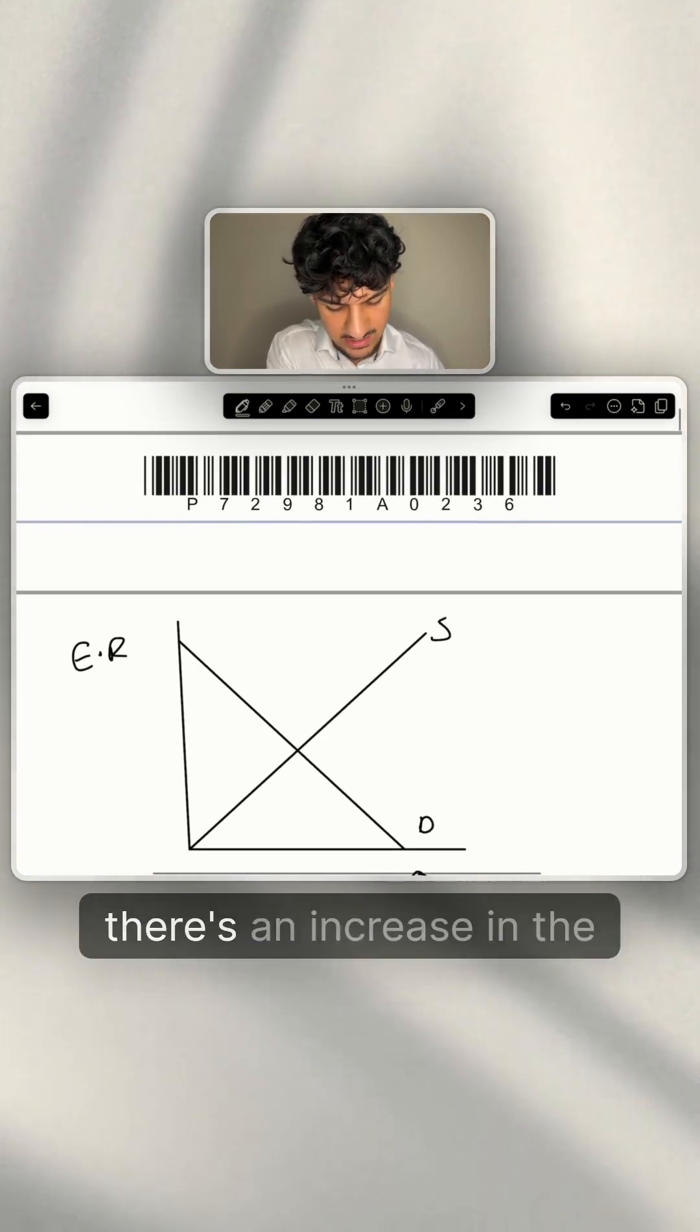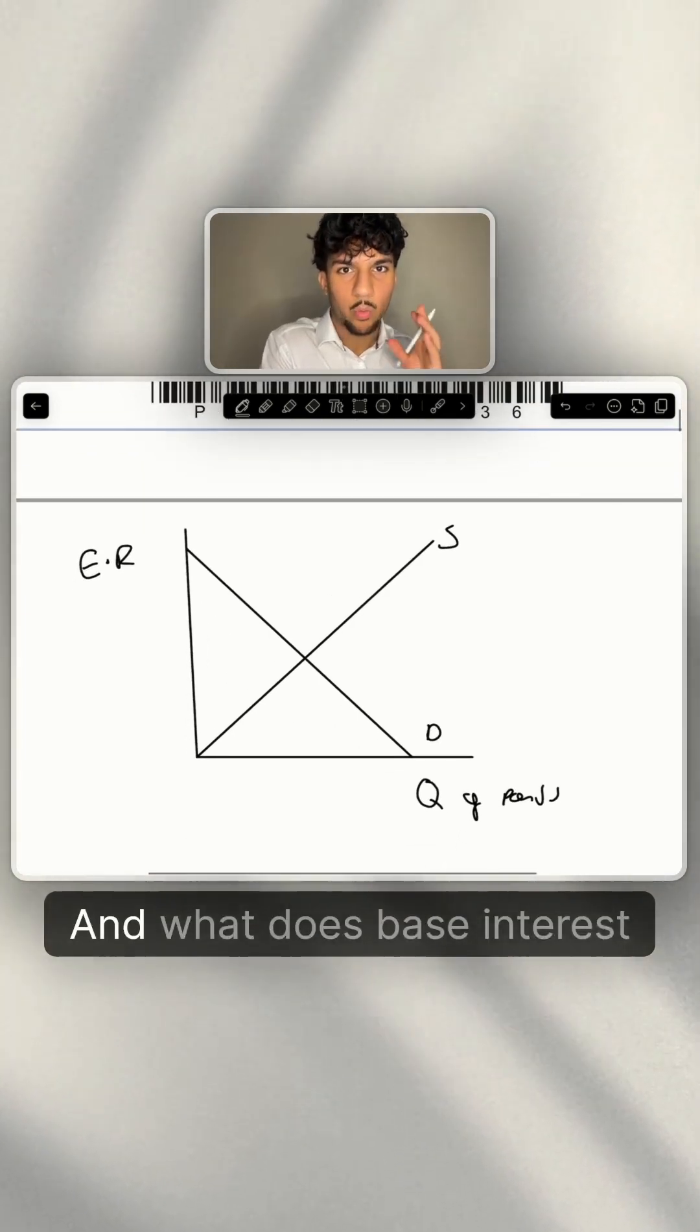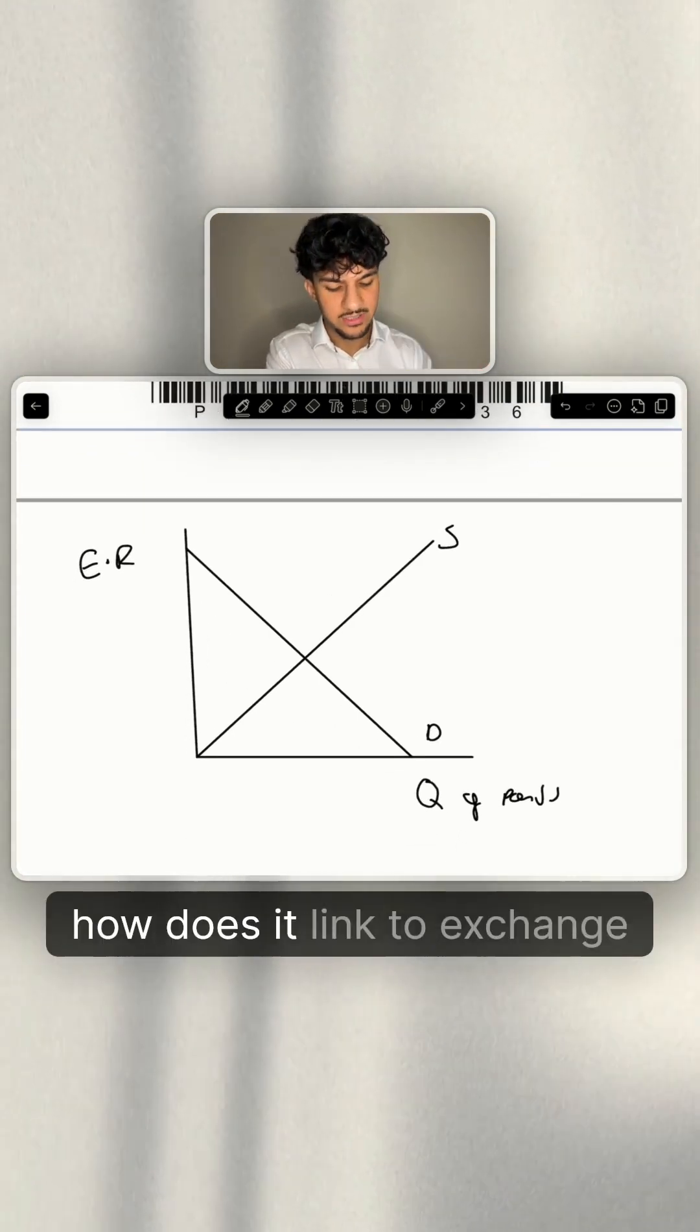Now, what is the question saying? The question is stating there's an increase in the base interest rate. And what does base interest rate, how does it link to currencies? How does it link to exchange rate?